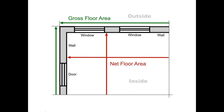Regardless of which way you choose, it's important to make sure that you're measuring the gross floor area. Typically, there's a lot of easy information on the floor area of your school, but it's going to be net floor area. What you want for Portfolio Manager is the gross floor area. That means if you're looking at the building plans, you've got to make sure you get the exterior dimensions. If you're using a tape measure, you need to be outside the building measuring it instead of inside.